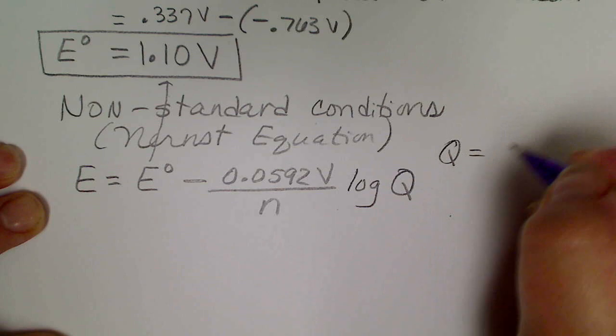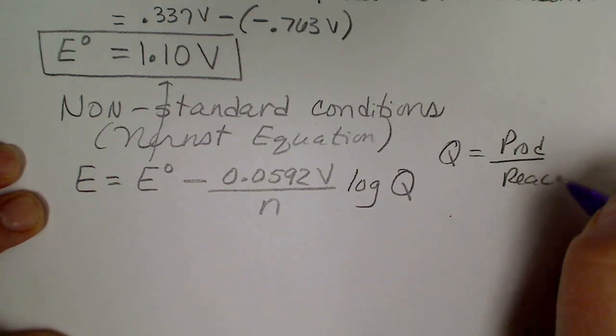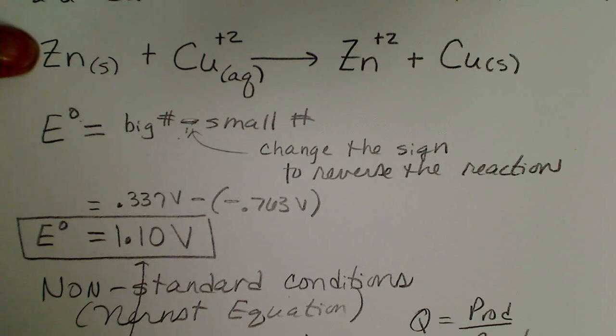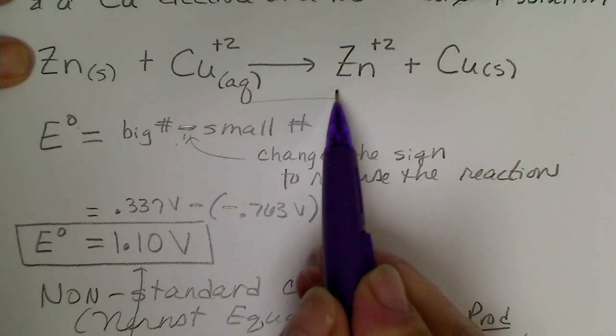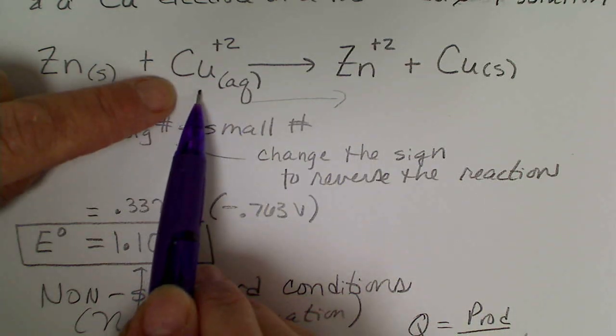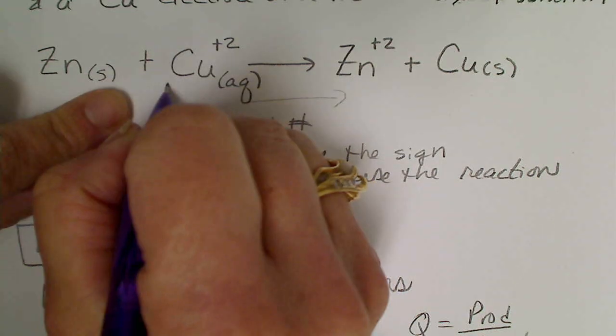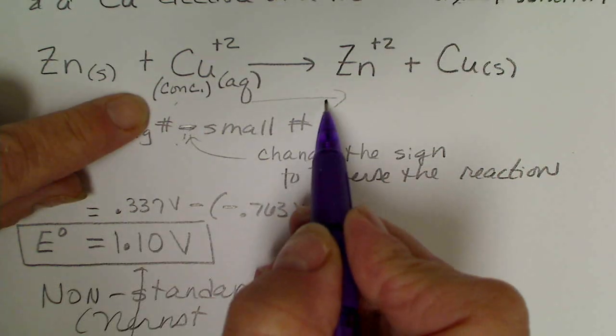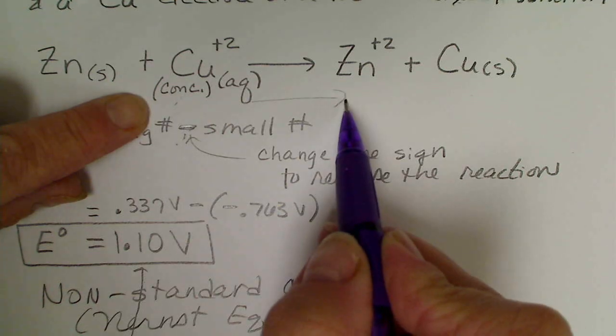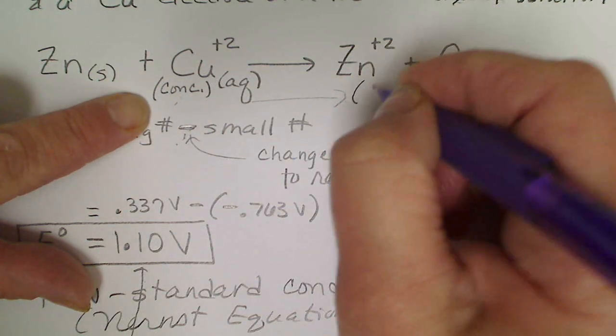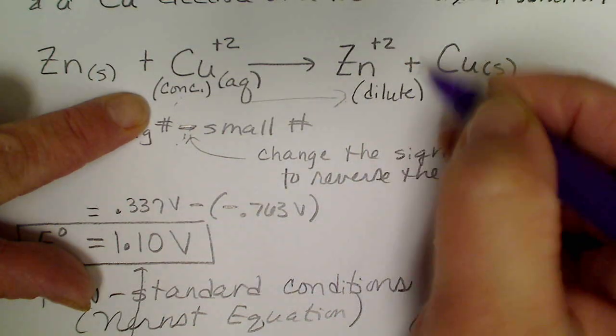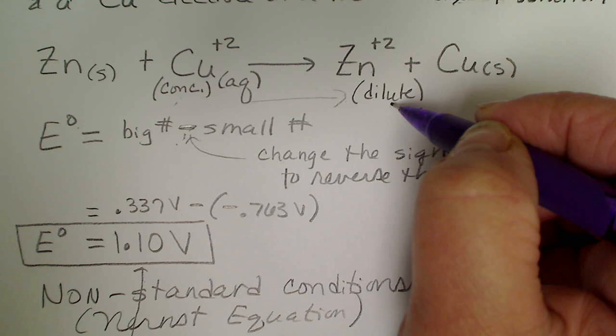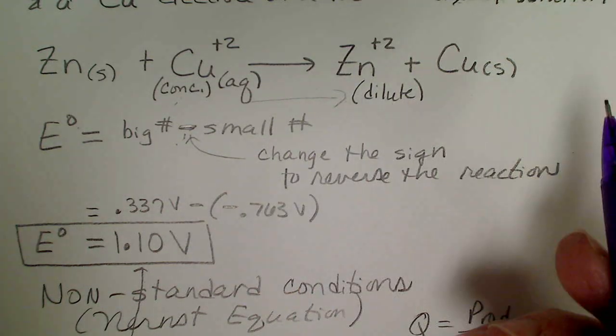So Q, remember, is always products over reactants. So if I think about Le Chatelier's principle for a few minutes, if I want this reaction to continue to proceed toward the right, if I make the copper solution more concentrated, so let's do that, if we add more reactants, then Le Chatelier's principle says that that will cause that equilibrium to shift to the right. And if I make the zinc solution more dilute, in a way that's similar to removing products, if I make the solution more dilute than one molar, that will also cause the reaction to continue to proceed to the right.